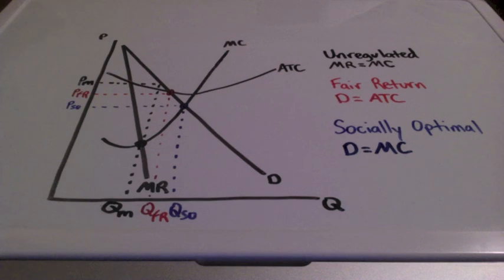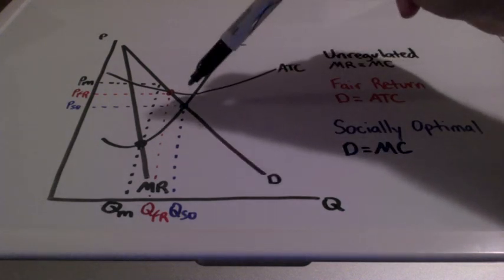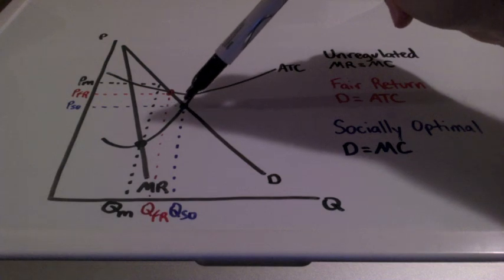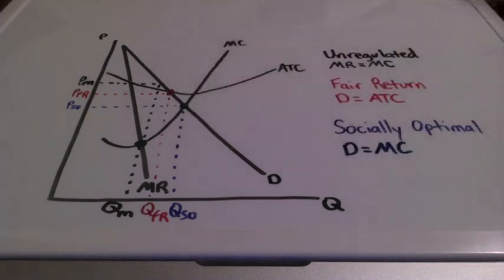Now there's a problem when we are at the socially optimal level for the firm, because we're showing huge losses, because we are well below the average total cost curve. The government would most likely have to subsidize the firm. So what could happen here between the firm and the government?